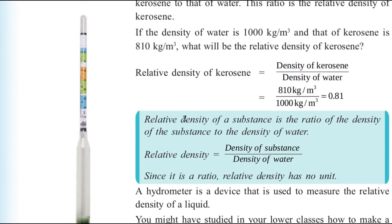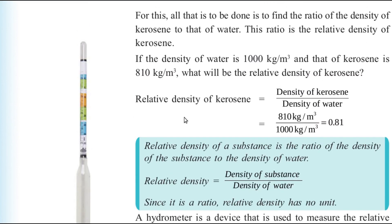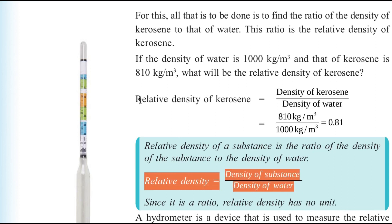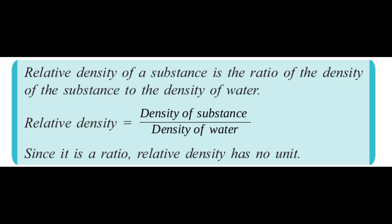To summarize: relative density has no unit, and it can be calculated using the equation — density of substance divided by density of water. Since we already know the density of water is 1000 kg/m³, by knowing the density of any substance its relative density can easily be found.